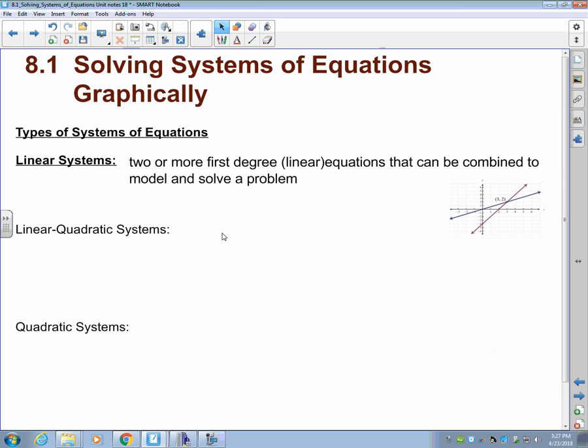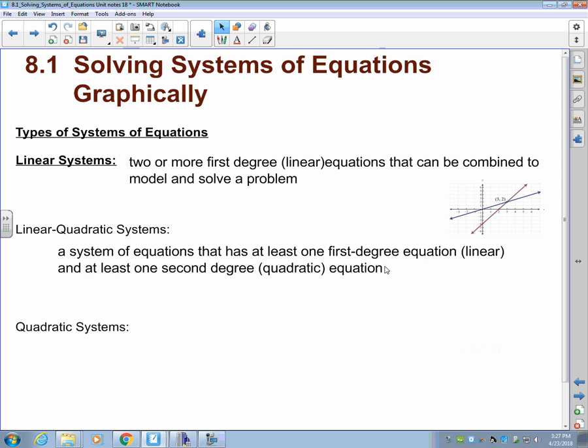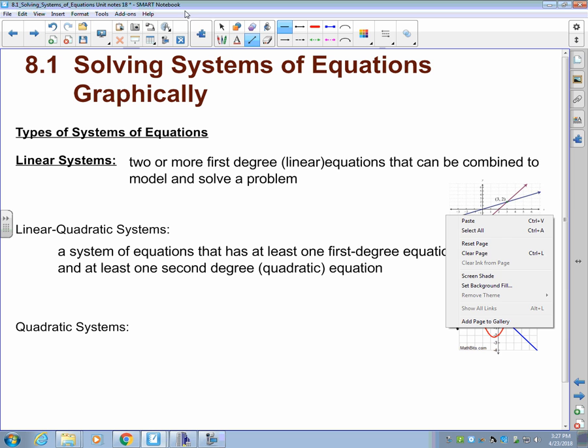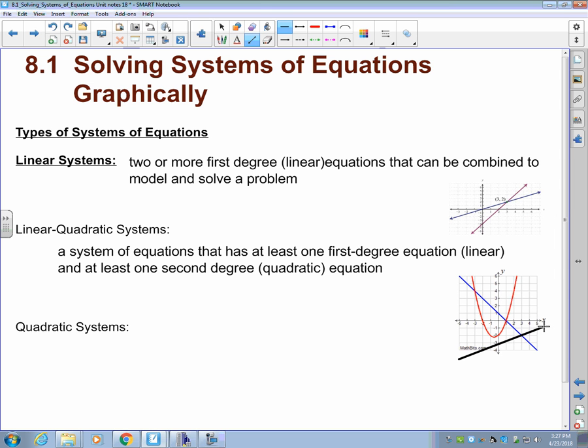A linear system had two or more first-degree equations. Then a linear-quadratic system, you might be able to guess, is a system that has at least one first-degree or linear equation and at least one second-degree or quadratic equation. It would look something like that, where we have one parabola and one linear function. Now this one can have a few options. You could have two solutions like we have here. We could have no solutions. And we could have one solution, and that's if it's just tangent to it, right? It just touches at one point.